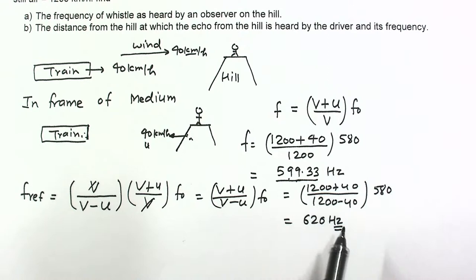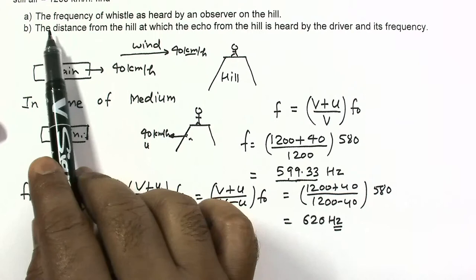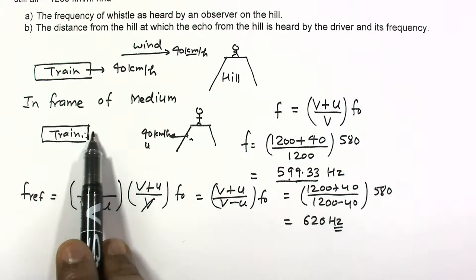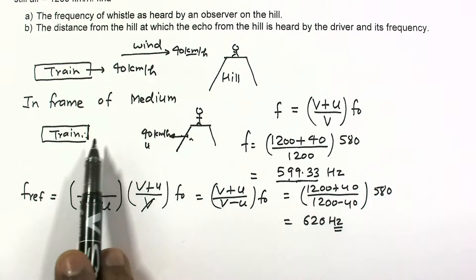So the driver will hear the reflected sound of frequency 620 Hz. Now for the next part of the question: the distance from the hill at which the echo from the hill is heard by the driver. When the driver hears the echo, the sound has traveled to the hill and come back, while the train has also moved forward during that time.